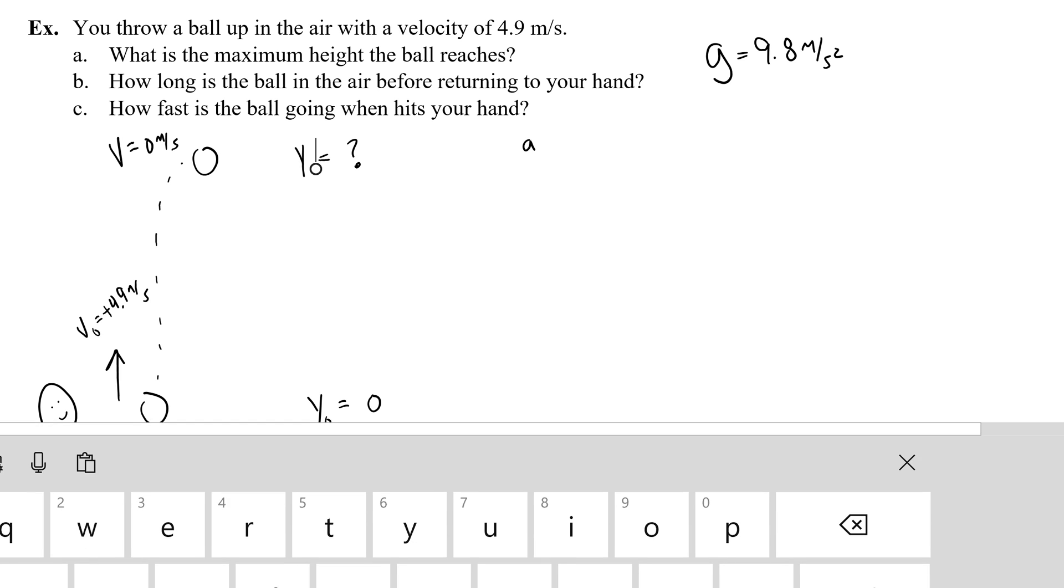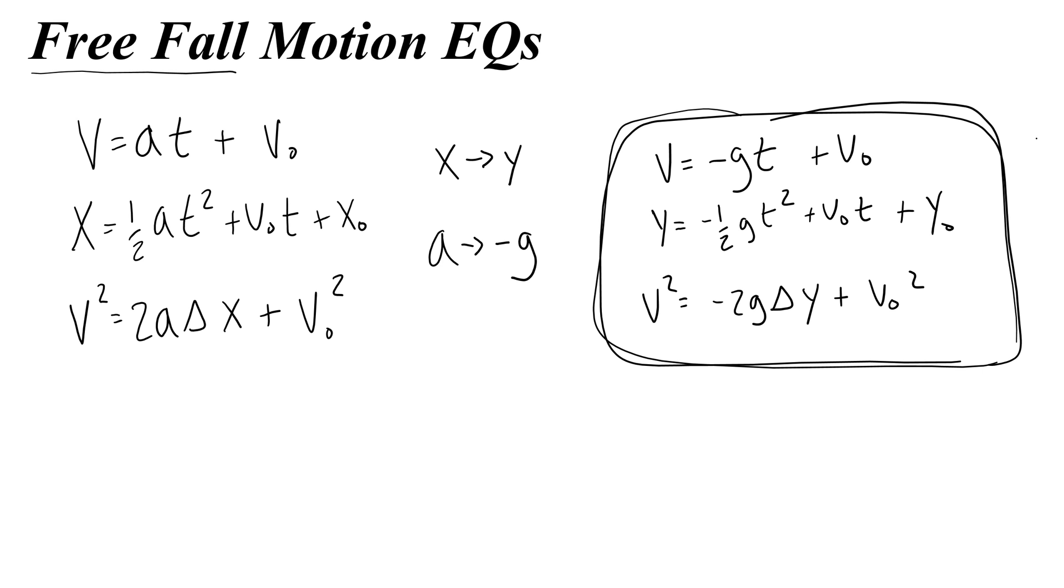So for part a, I am looking for that maximum height. I look at my equations and I think what has v naught, v, y, y naught, and g. Or again, remember that delta y is always y minus y naught, so if I have a delta y I can use that equation too. So go to my equation and I think which of these three has v, v naught, g, and y and y naught, or delta y. Now notice that I wasn't given time in any of my information, so the ain't got no time equation might be our best bet.